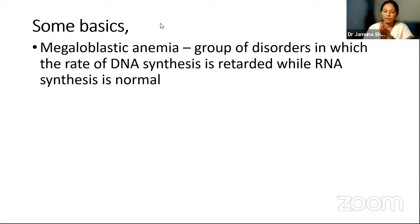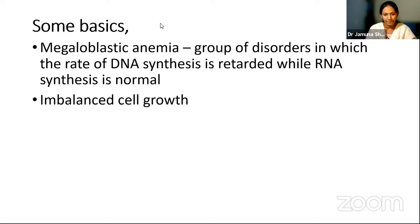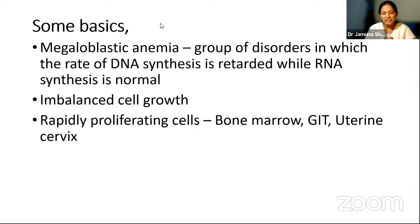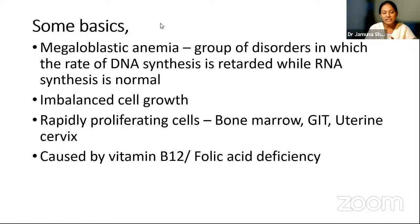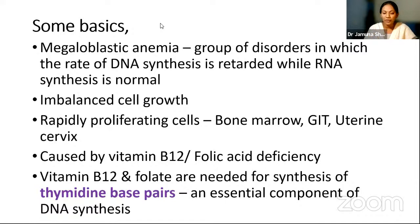Let's revise some basic concepts. Megaloblastic anemia is a group of disorders in which the rate of DNA synthesis is retarded, whereas RNA synthesis is perfectly normal. This leads to an imbalance in cell growth, first affecting rapidly proliferating cells such as bone marrow, gastrointestinal tract, and uterine cervix. This is basically caused by vitamin B12 and folic acid deficiency, which are needed for the synthesis of thymidine base pairs, an essential component in DNA synthesis.